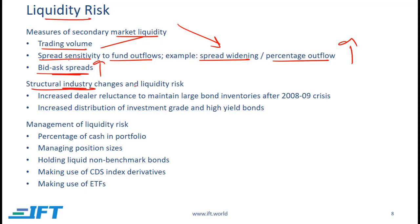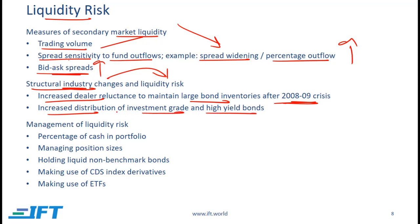There are important structural industry changes that impact liquidity risk. One is increased dealer reluctance to maintain large bond inventories after the 2008-2009 crisis, due to new regulations and reduced risk appetite, which decreases liquidity. Another factor is increased distribution of investment grade and high yield bonds across a much larger group of funds — which has actually contributed to an increase in liquidity. Overall, though, the first factor has dominated.